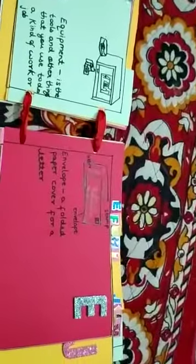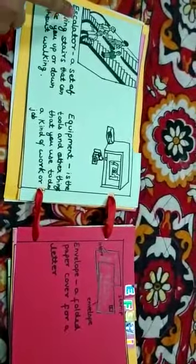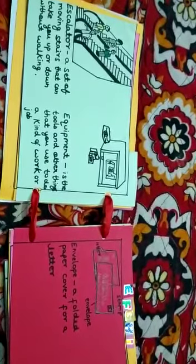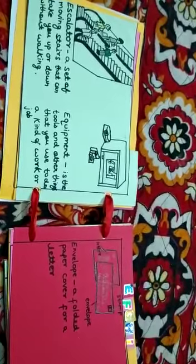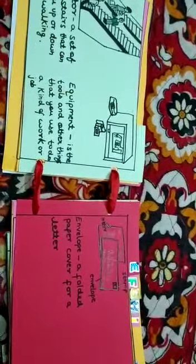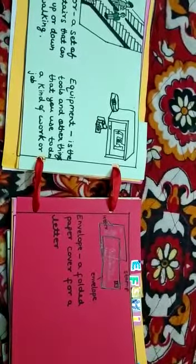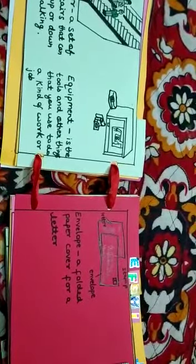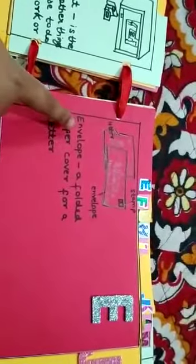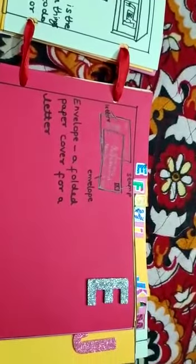Our next alphabet is E. The first word is escalator. Escalator is a set of moving stairs that can take you up or down without walking. The second word is equipment. It is the tools and other things that you use to do a kind of work or a job. The third word is envelope, which means a folded paper cover for a letter.